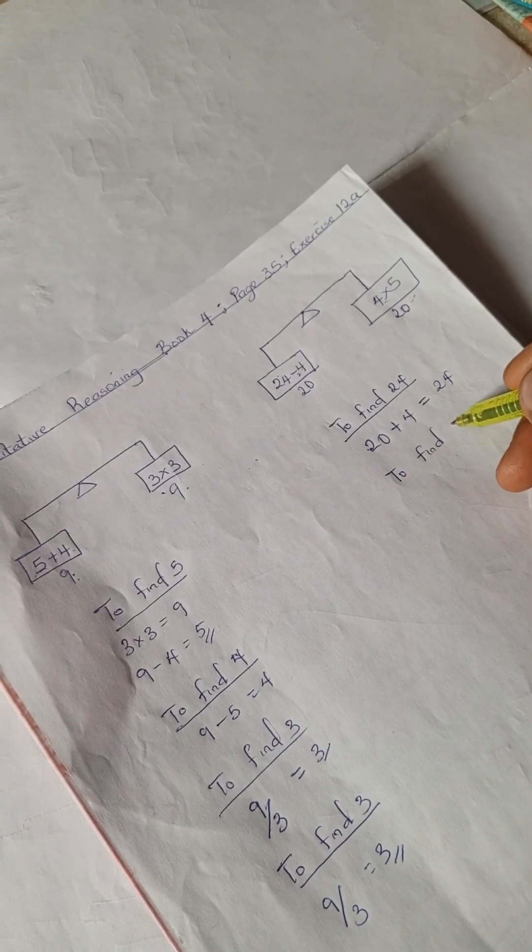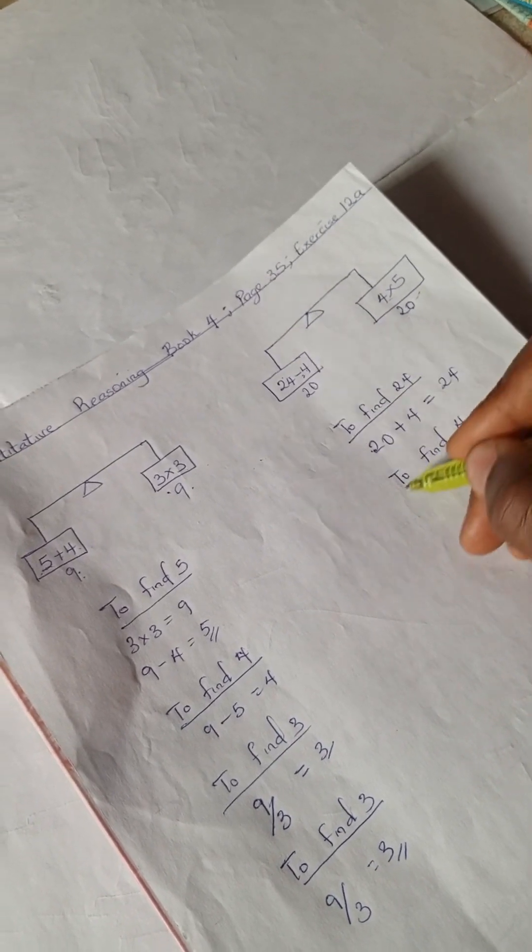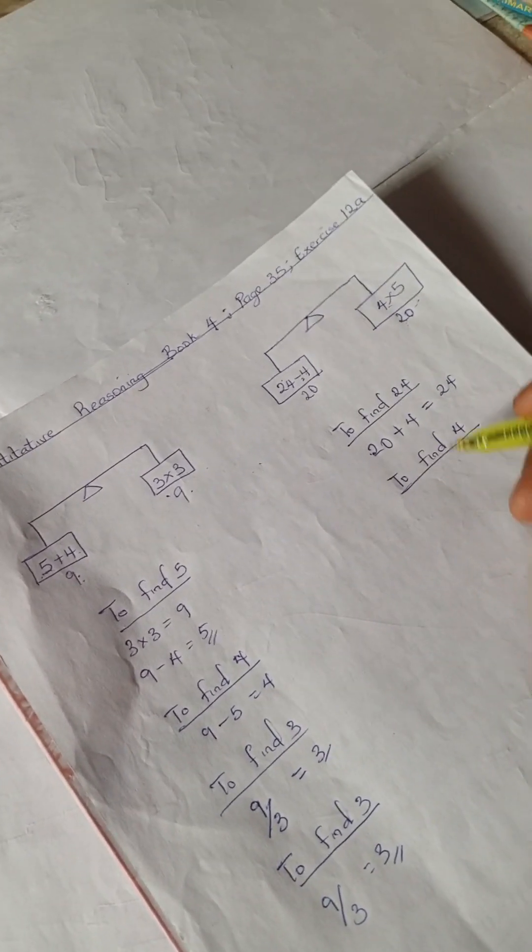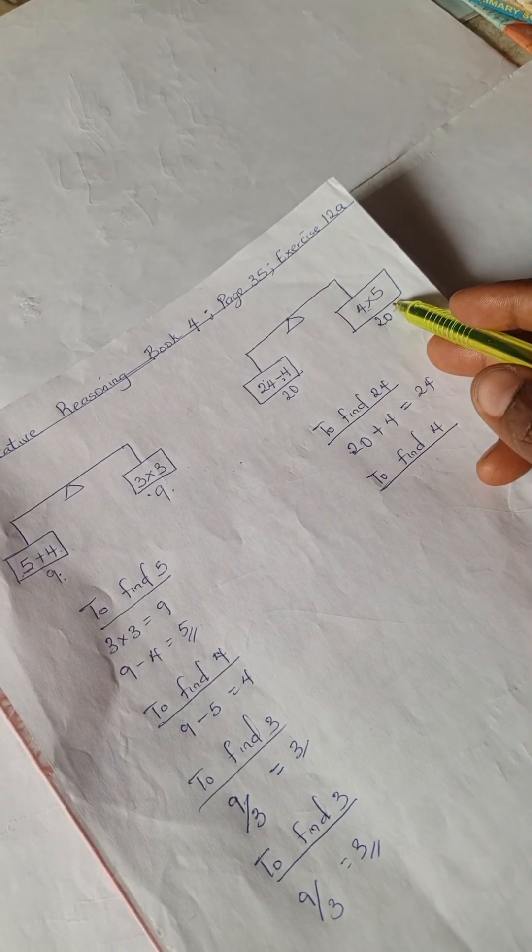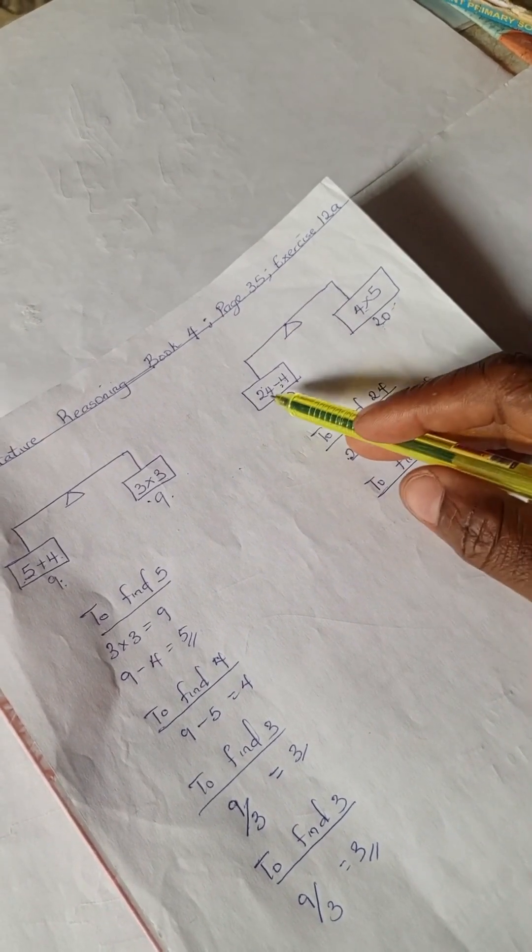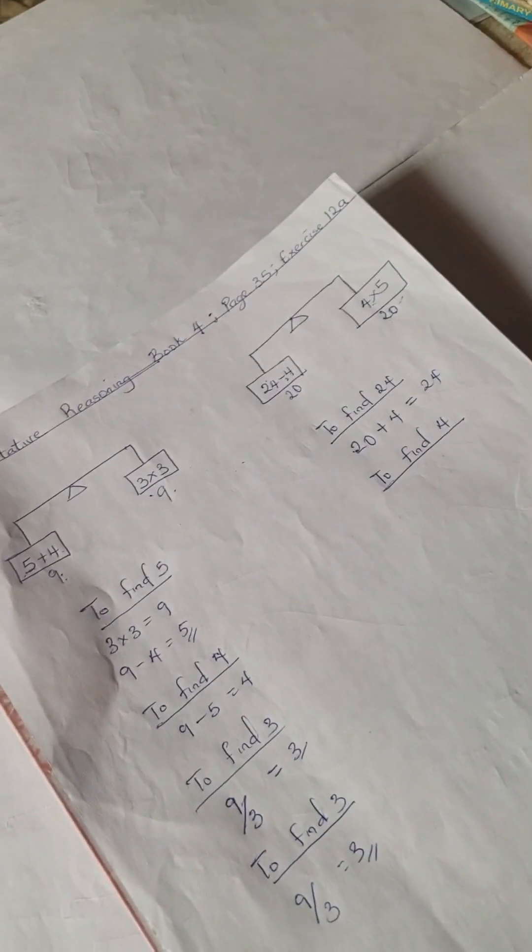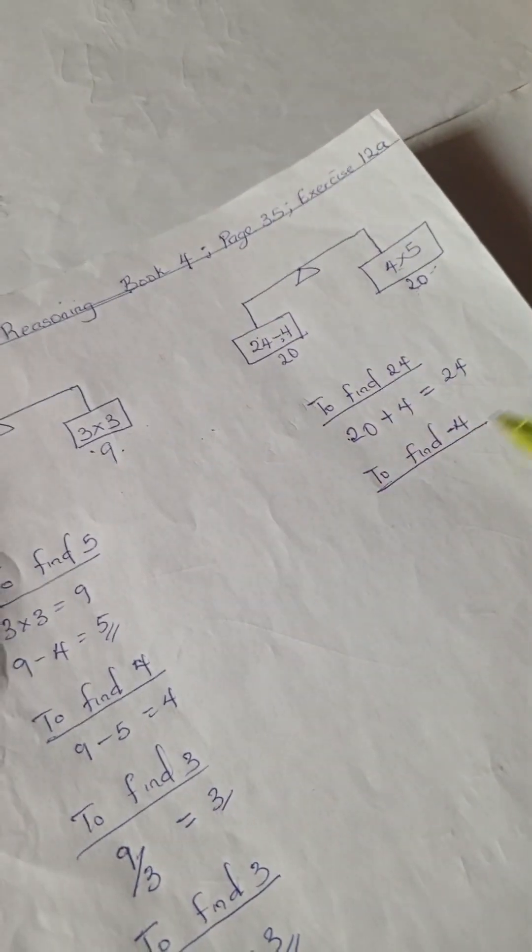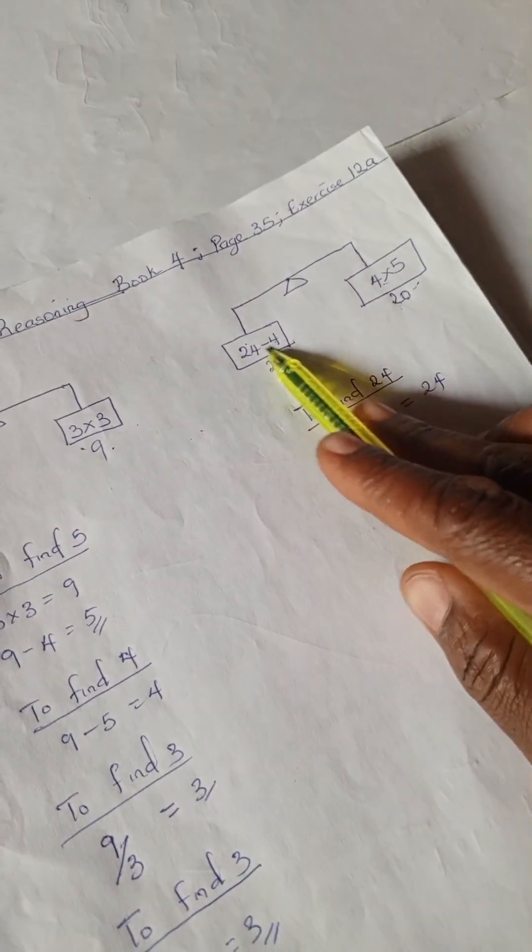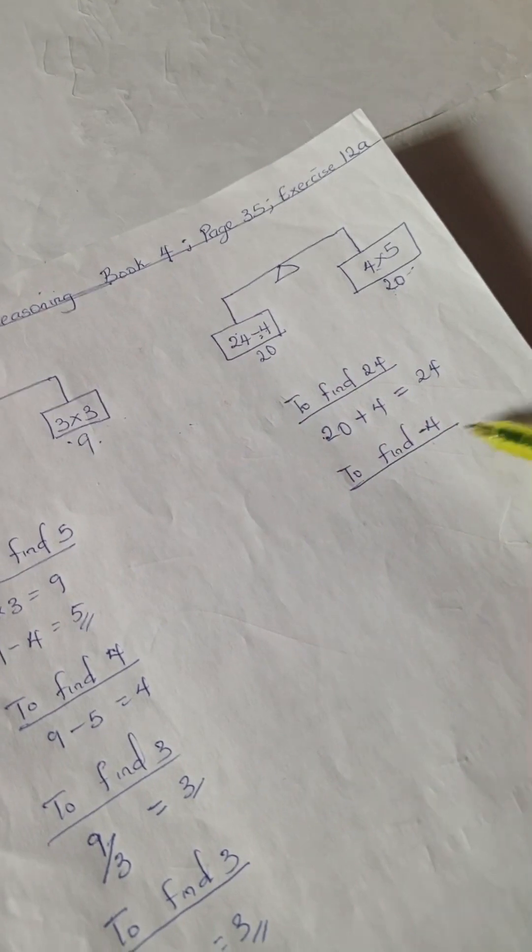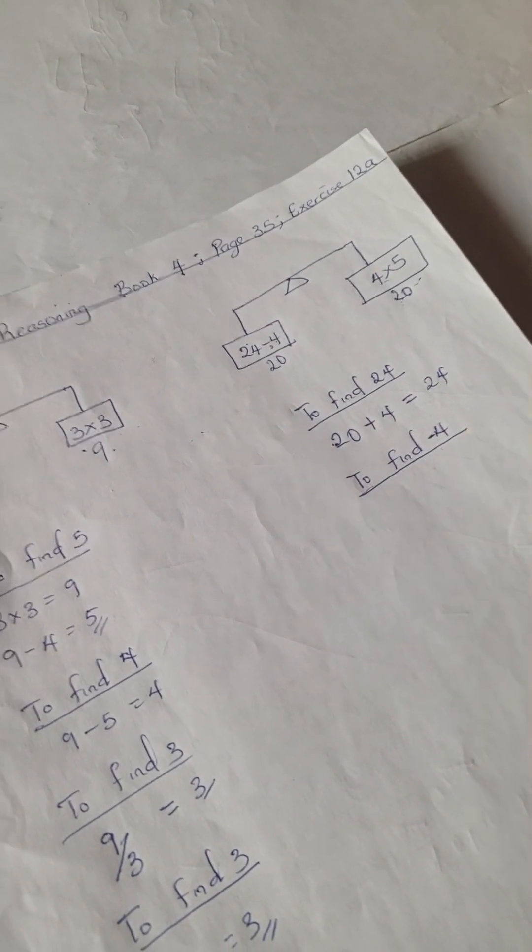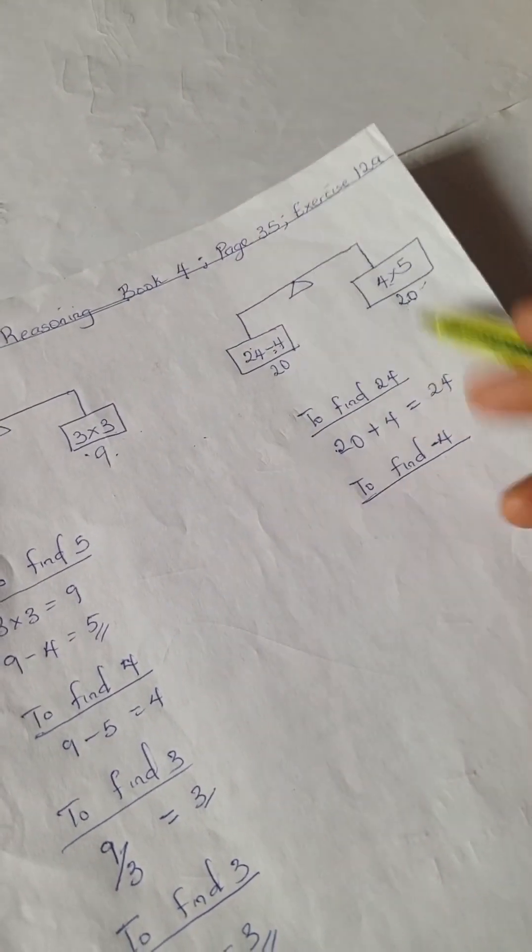Then to find 4, we have our 20 and we have our 4, right? So we're going to find our minus 4. Look at this, this is a minus, it's a negative 4. So negative 4 here.